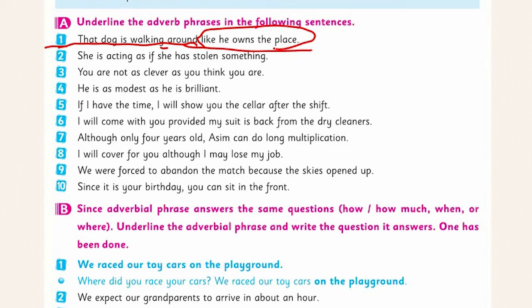That is why he is walking around like that. Sentence 2: 'She is acting as if she has stolen something.' Again, adverbial phrase of reason. 'As if she has stolen something' is the adverbial phrase — this is the reason for her acting that way.